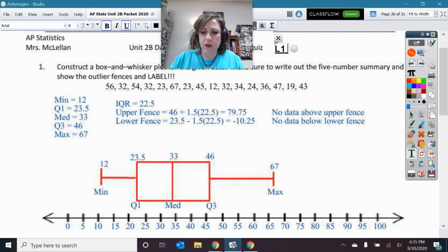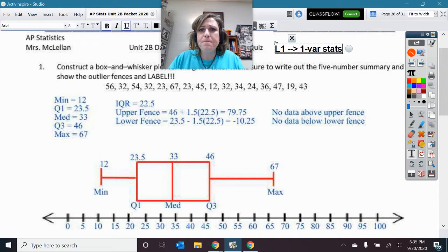So you put it into list 1, and then you go stat over to calc, one-variable statistics. When you do that, then you scroll down and it'll give you the five-number summary. So I'll pull that calculator up real quick and show you that because I wanted to show you something else on that as well.